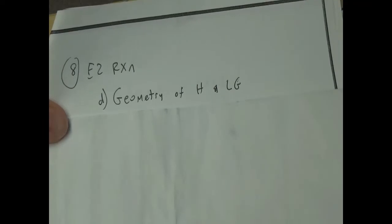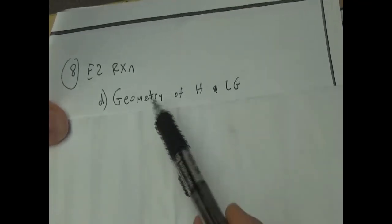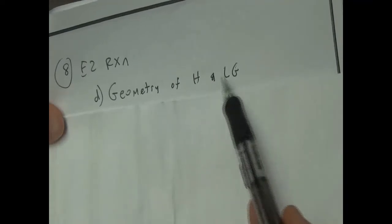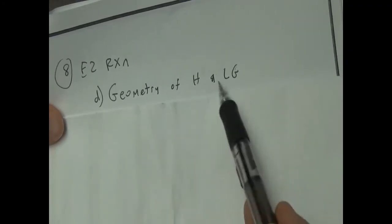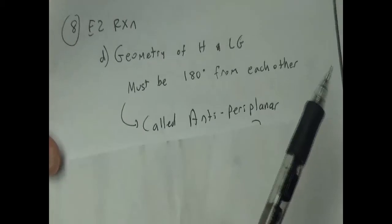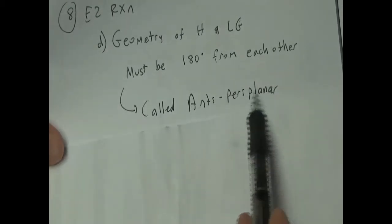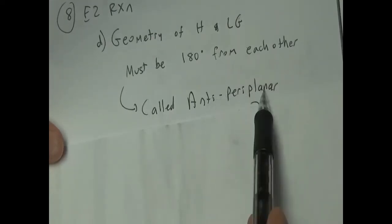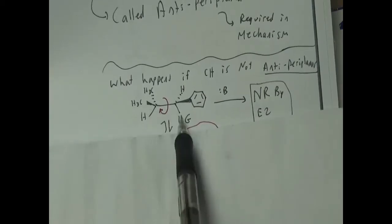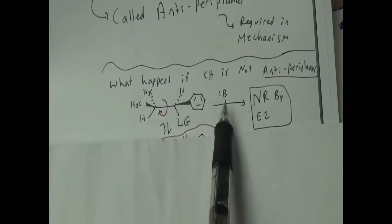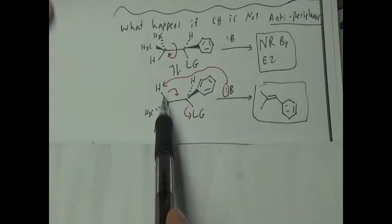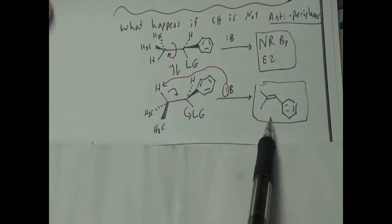Another thing from last time: the E2 reaction requires the hydrogen and the leaving group to be 180 degrees apart — that's called anti-periplanar. It pulls off the hydrogen to kick off the leaving group next door. Anti-periplanar means 180 degrees. If the hydrogen and leaving group are at zero degrees, there's no reaction with a base. But if it rotates so the hydrogen is 180 degrees, the reaction proceeds.